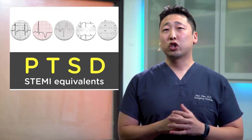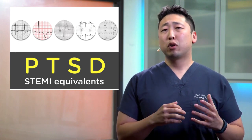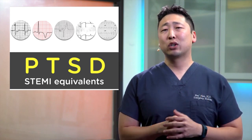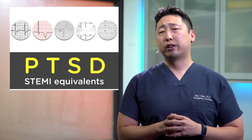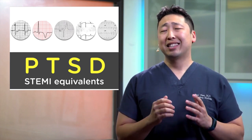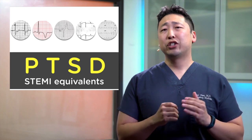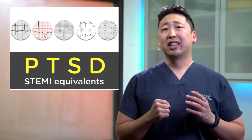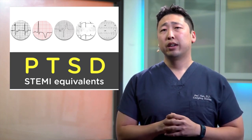S is for Sgarbossa criteria — the inappropriate concordance and/or excessive discordance in the setting of a left bundle branch block pattern. D is for diffuse ST depression with ST elevation in aVR, which suggests a left main coronary artery occlusion.